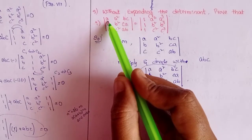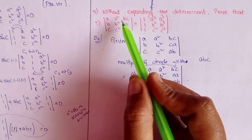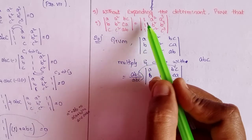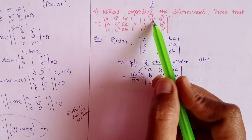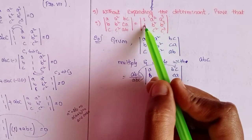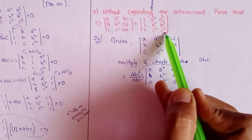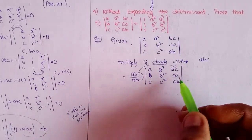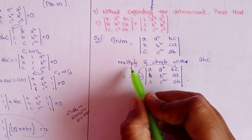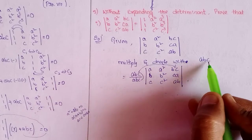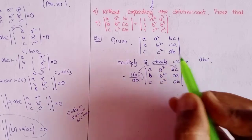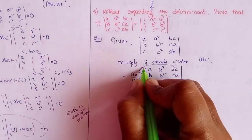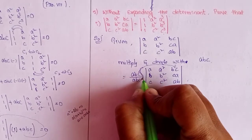First: determinant of [a, a², bc; b, b², ca; c, c², ab] equals determinant of [1, a², a³; 1, b², b³; 1, c², c³]. To prove this, multiply and divide by abc — write abc/abc into the first determinant.